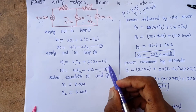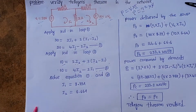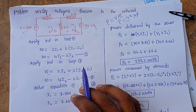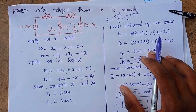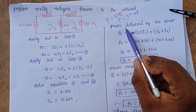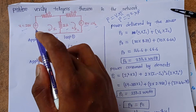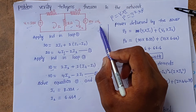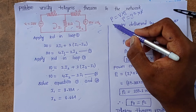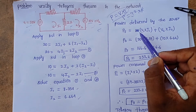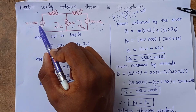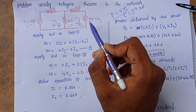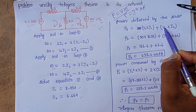Solving equations one and two, we get I1 and I2. Now we calculate the power delivered by the sources. There are two voltage sources, so power is delivered at two places. Power delivered by V1 is V1 × I1, and power delivered by V2 is V2 × I2. Total power delivered = V1·I1 + V2·I2.